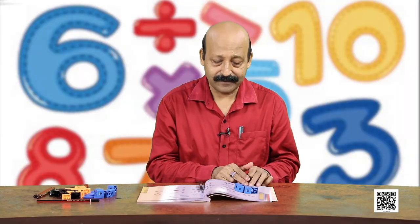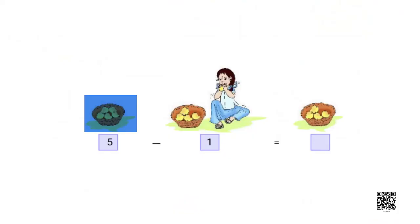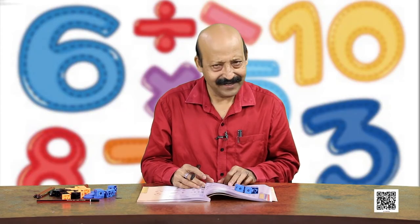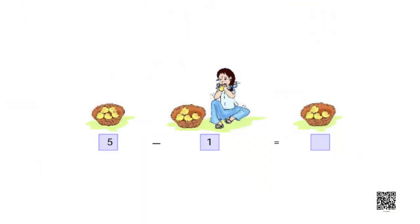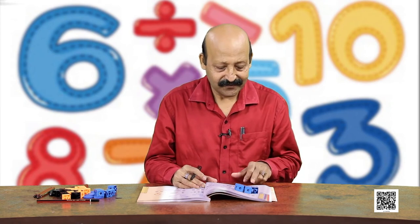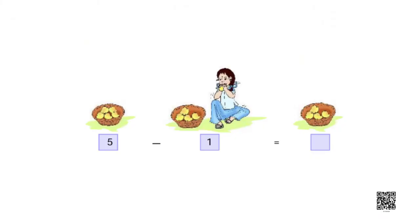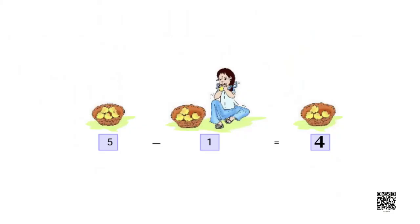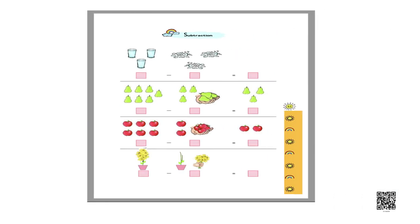5 minus 1 — there are 5 mangoes and 1 has been eaten. How many mangoes are left? Count: 1, 2, 3, 4. So 5 minus 1 equals 4. Now it is your turn — write it down.